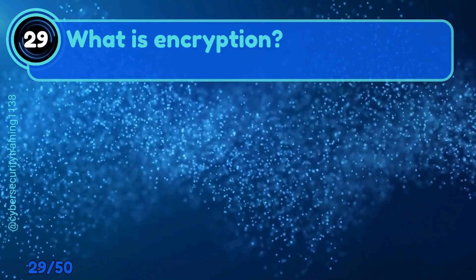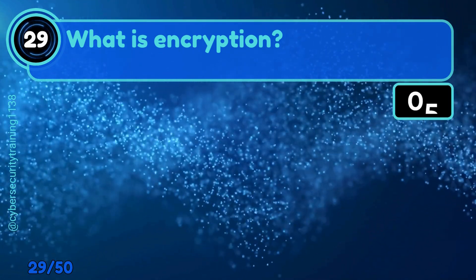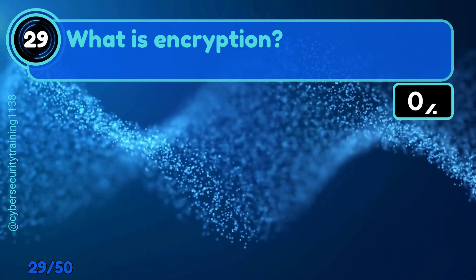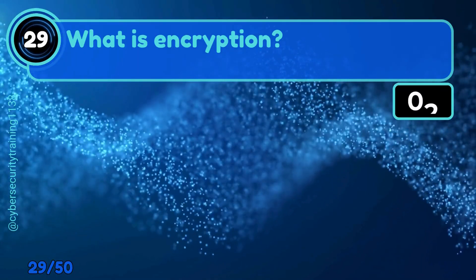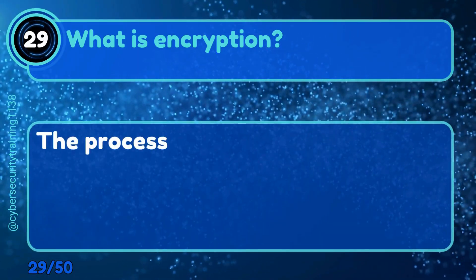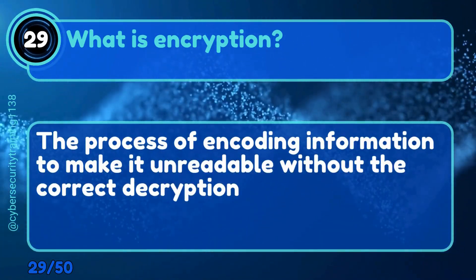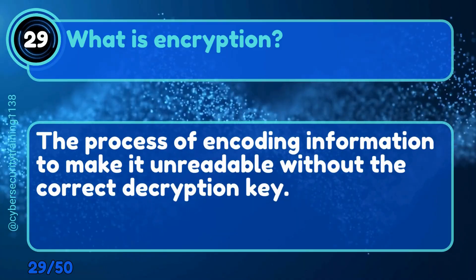Question 29: What is encryption? The process of encoding information to make it unreadable without the correct decryption key.